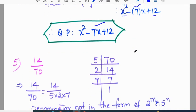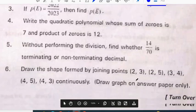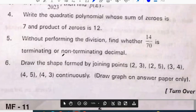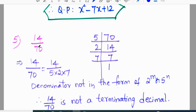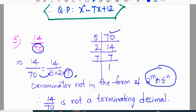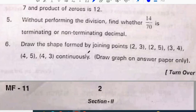Without performing the division find whether 14 by 70 is terminating or non-terminating. Whenever terminating and non-terminating concept is there you have to check the denominator. Write the denominator in division form and convert into the prime factors. So 70 can be expressed as 5 into 2 into 7. Denominator should be only in the form of 2 power of m or 5 power of n or mixture of both, but here 7 is there, so this is not terminating decimal.